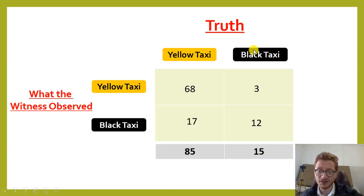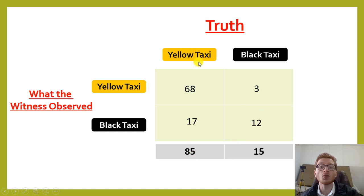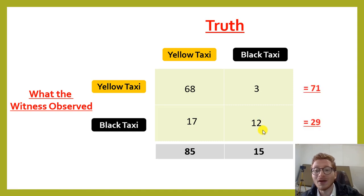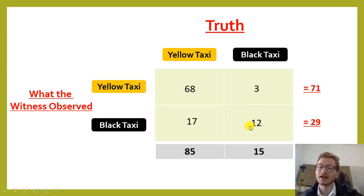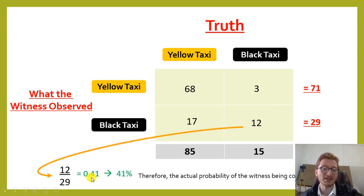There are black taxis which he identified as black — these are the true positives — and there are yellow taxis which he said were black, the false positives. If we add these two numbers together: 17 plus 12 equals 29. He said he saw a black taxi, so there are 29 such cases. The probability that it is really black is 12 divided by 29, which equals 0.41.